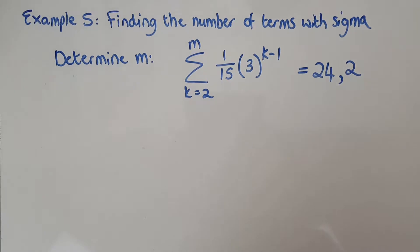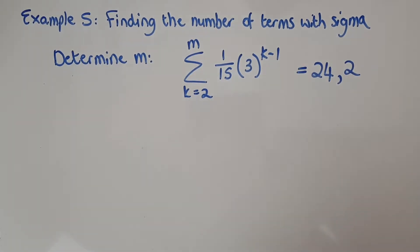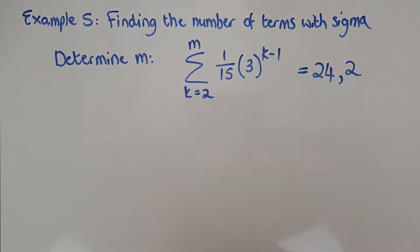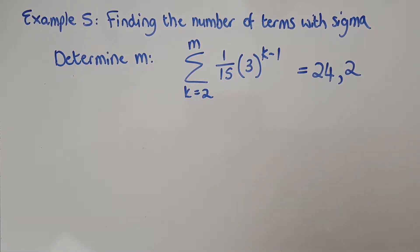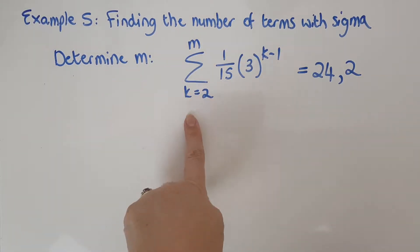Number 5 is finding the number of terms, but the information you get given is in sigma format. So the equation simply says determine m, which is related to finding the number of terms. Let's just get that first.